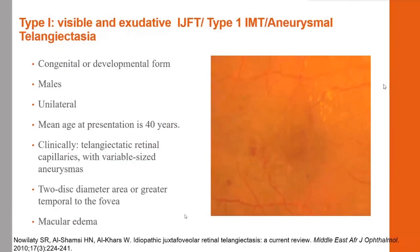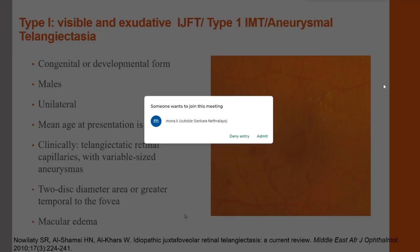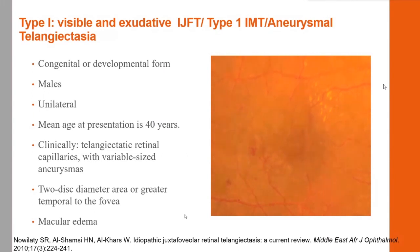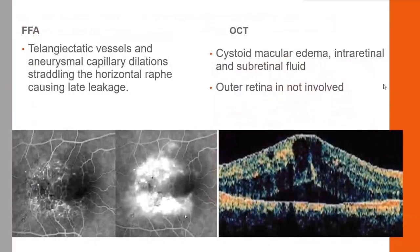Type 1 IJFT, or aneurysmal telangiectasia, is a congenital disease seen in males, is unilateral, and has a mean age of presentation of 40 years. Clinically, telangiectatic capillaries with variable-sized aneurysms are seen, usually within one disc diameter around the fovea, and patients may present with macular edema. On FFA, telangiectatic vessels and aneurysmal capillary dilatation straddling the horizontal raphe cause leakage. On OCT, macular edema with intra- and subretinal fluid is seen, but the outer retina is not involved in type 1.